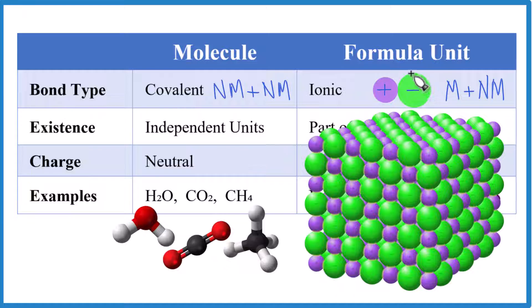And these formula units, they don't exist independently. But the important thing is we have a ratio that stays the same, one to one. One sodium to one chlorine atom. So our formula unit, that's the lowest whole number ratio of ions in the crystal.